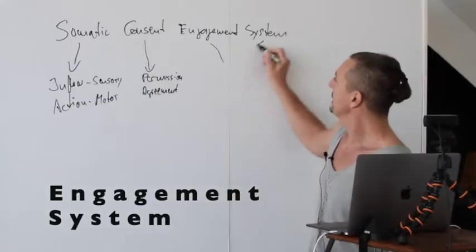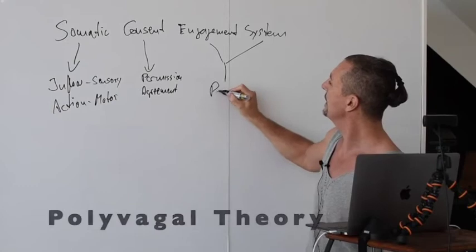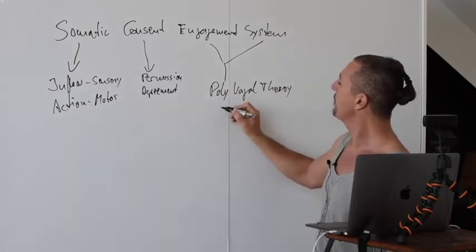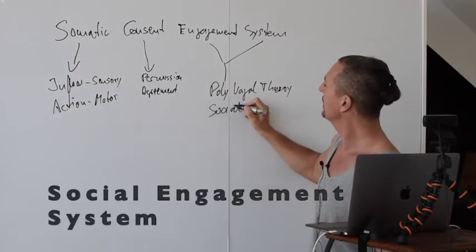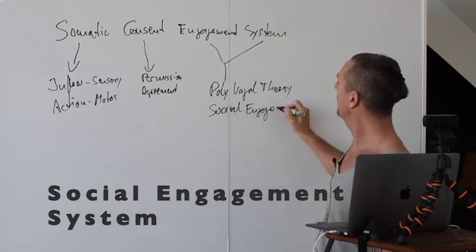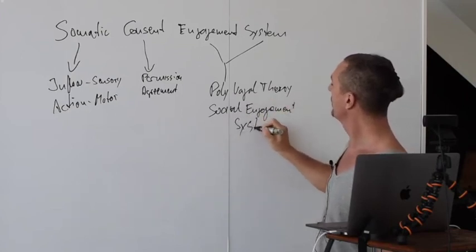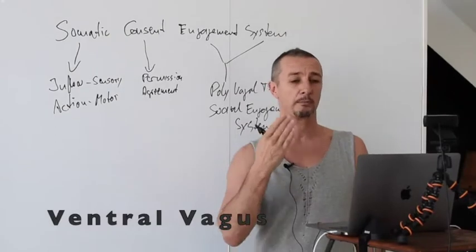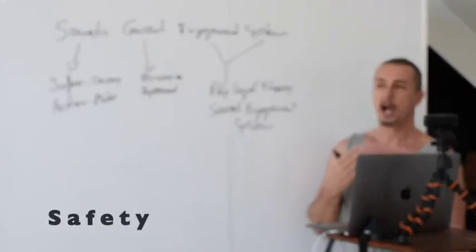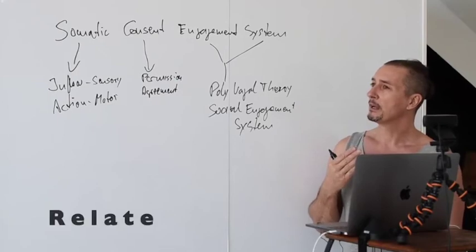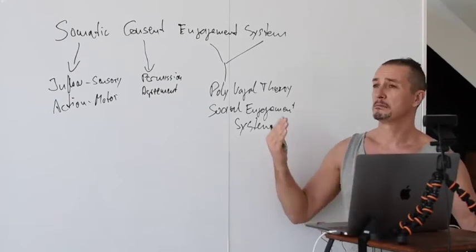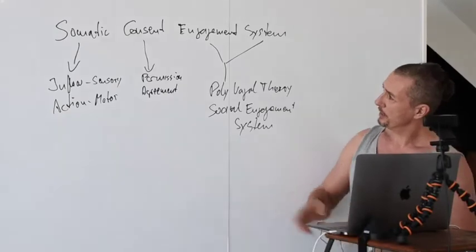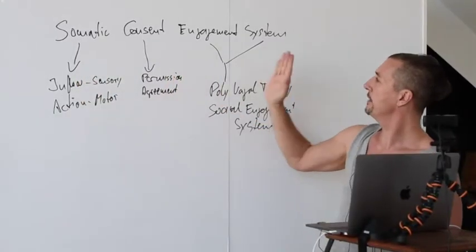Then we have the engagement system. The engagement system comes from the polyvagal theory about the social engagement system, pretty much about the ventral vagus nerve. How we engage with other people, how we create safety with other people, how we relate and make connections. Intimacy, safety, the entire thing. So this is Somatic, Consent, and the Engagement System.